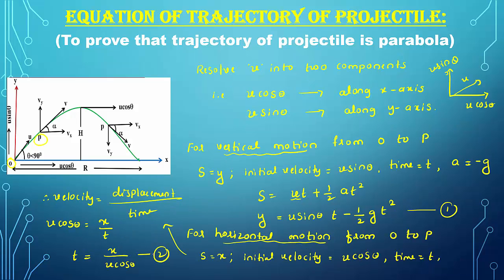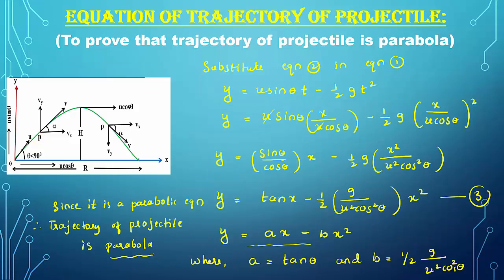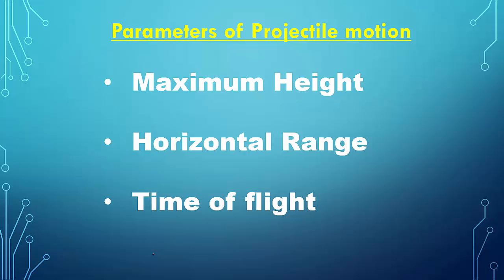Initially we considered the vertical motion equation and the horizontal motion equation, then substituted equation 2 into equation 1. Solving gave us the final answer in the form of a parabolic equation, so the path of the projectile is a parabola. This is the equation of trajectory of a projectile. Now let us study the three important parameters of projectile motion: maximum height H, horizontal range R, and time of flight T.